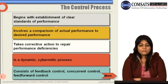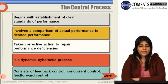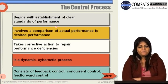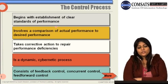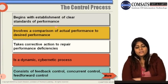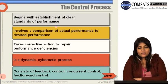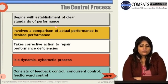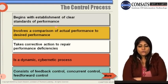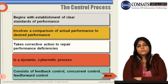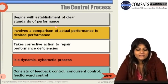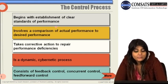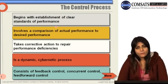The control process begins with the establishment of clear standards of performance. It involves a comparison of actual performance to desired performance, and takes corrective action to repair performance deficiencies. It is a dynamic cybernetic process consisting of feedback control, concurrent control, and feed-forward control. We are going to discuss this process stepwise in our upcoming slides.